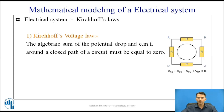As an example, consider a closed path A-B, B-C, C-D, and D-A, with resistors in each path. The potential drop between A and B is V_AB, between B and C is V_BC, between C and D is V_CD, and between D and A is V_DA. The summation of these voltage drops in a closed path is always equal to zero.